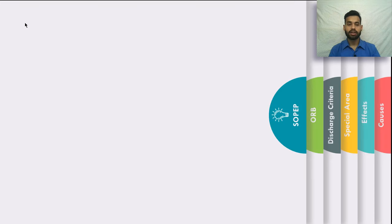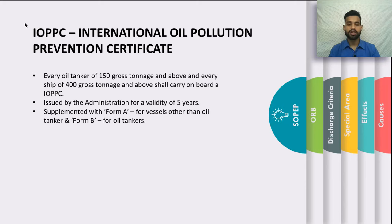The IOPP Certificate — the International Oil Pollution Prevention Certificate — must be carried by every oil tanker of 150 gross tonnage and above and every ship of 400 gross tonnage and above. It is issued by the administration for a validity of five years (or less, but not more). It is supplemented with Form A for vessels other than oil tankers and Form B for oil tankers. This concludes the overview of Annex 1.